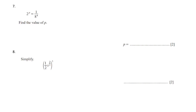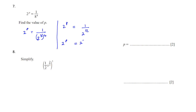Next question: 2 to the power of p is equal to 1 over 8 to the power of 4. Since the base is 2, write 8 as a power of 2: 8 equals 2 to the power of 3. So 2 to the power of p equals 1 over 2 to the power of 3, and the 4 is already there. This gives 1 over 2 to the power of 12, since 3 times 4 is 12. Bringing the power up makes it negative, so p is equal to negative 12.